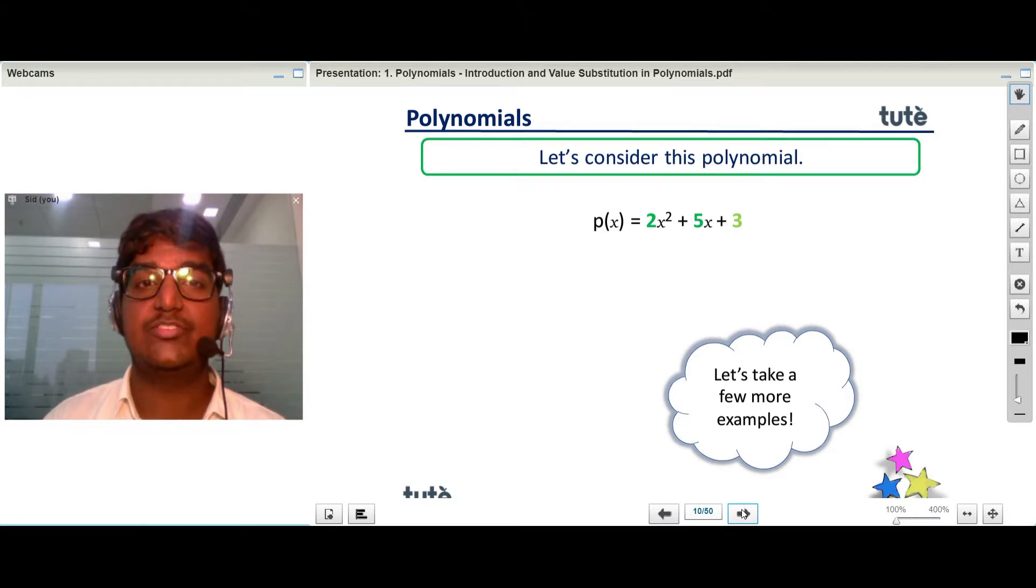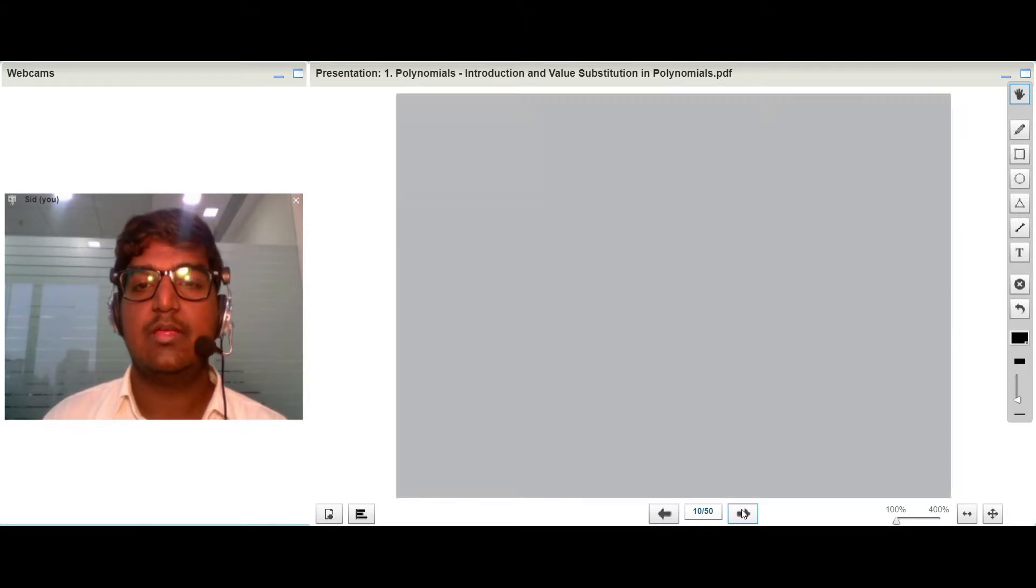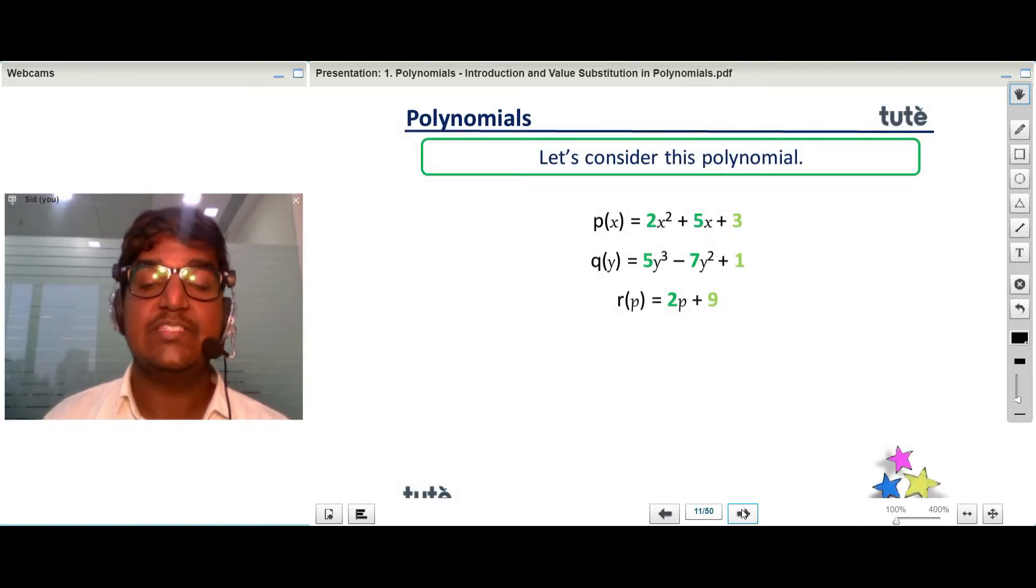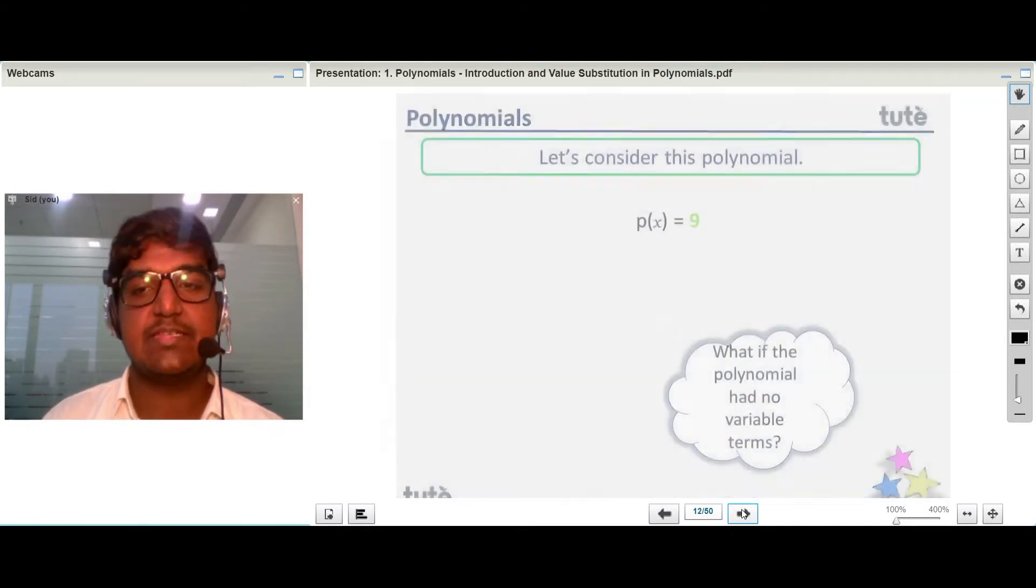Let's take a few more examples for polynomials. As you can see, these are a few more examples: Q(y) = 5y³ - 7y² + 1 and r(p) = 2p + 9.